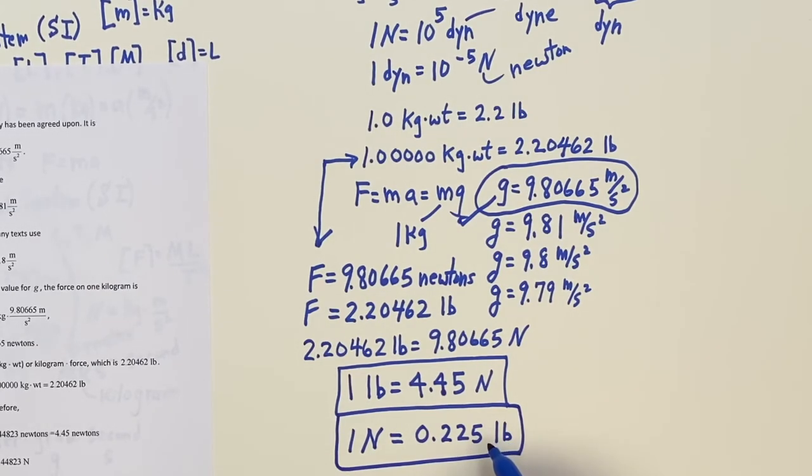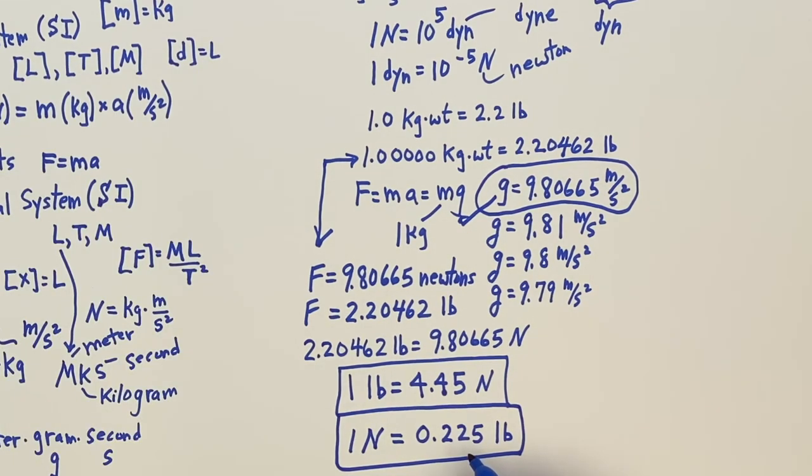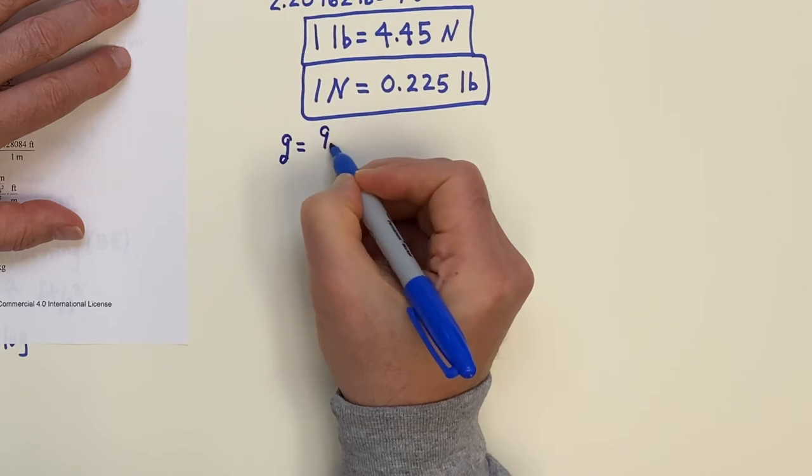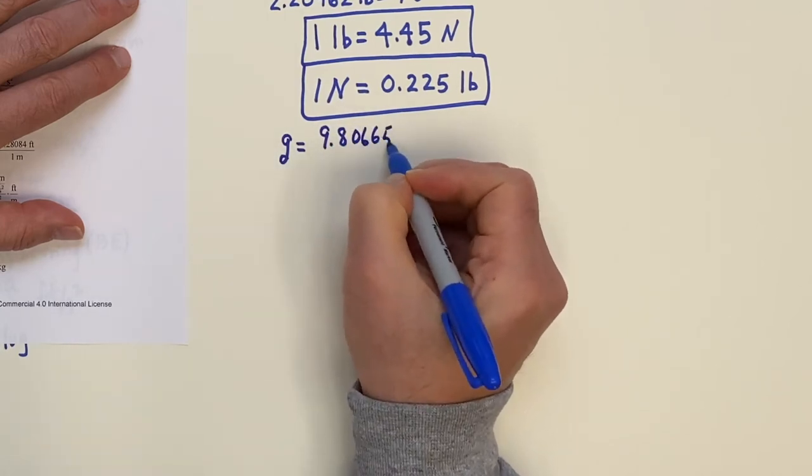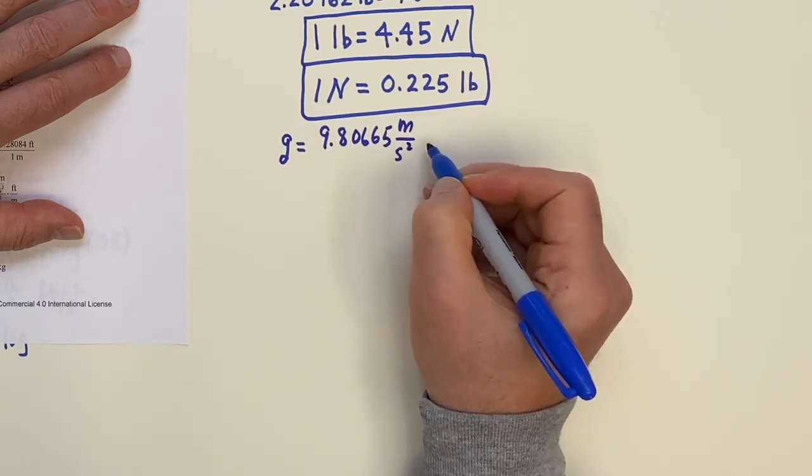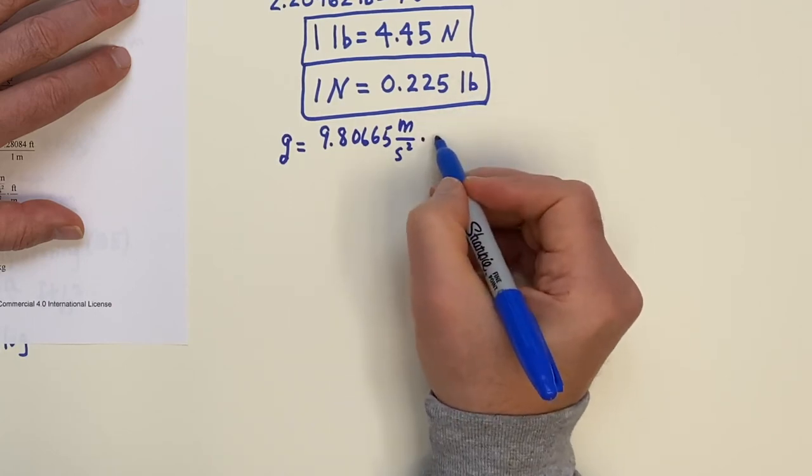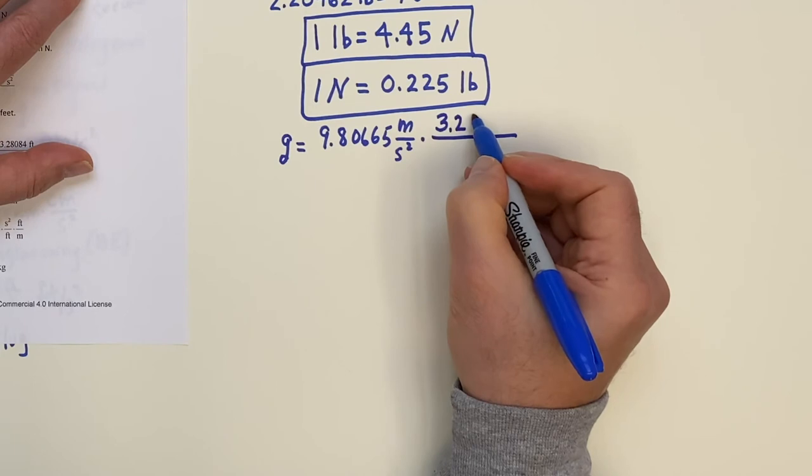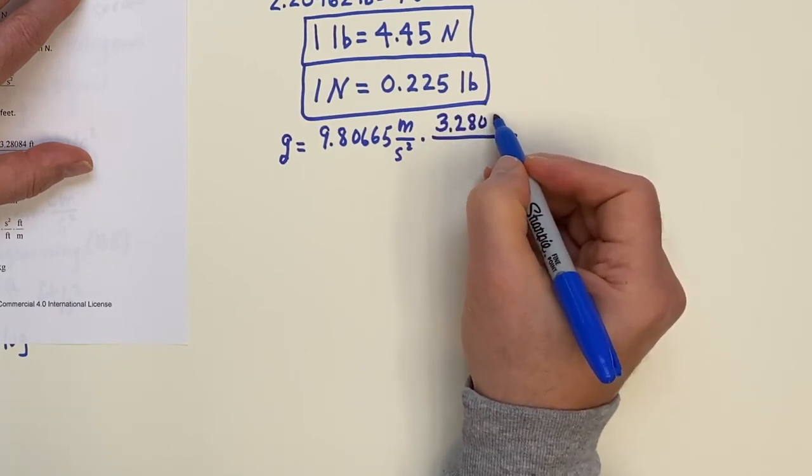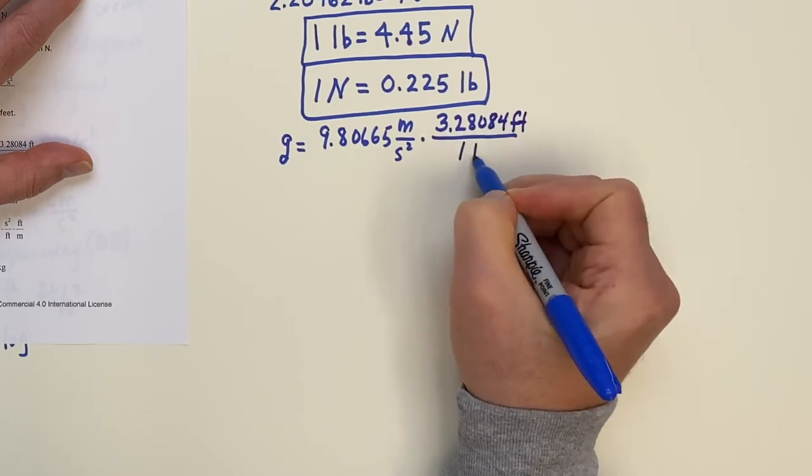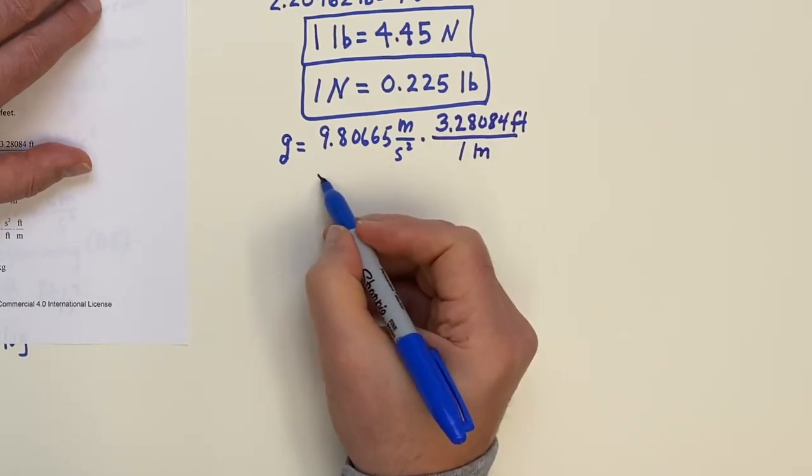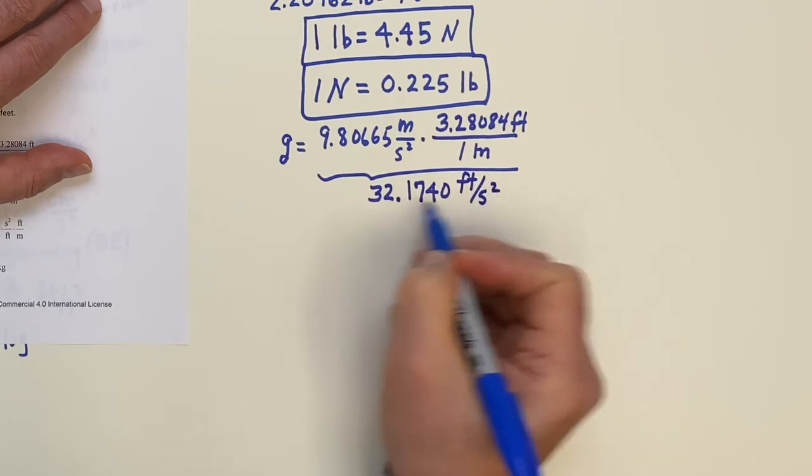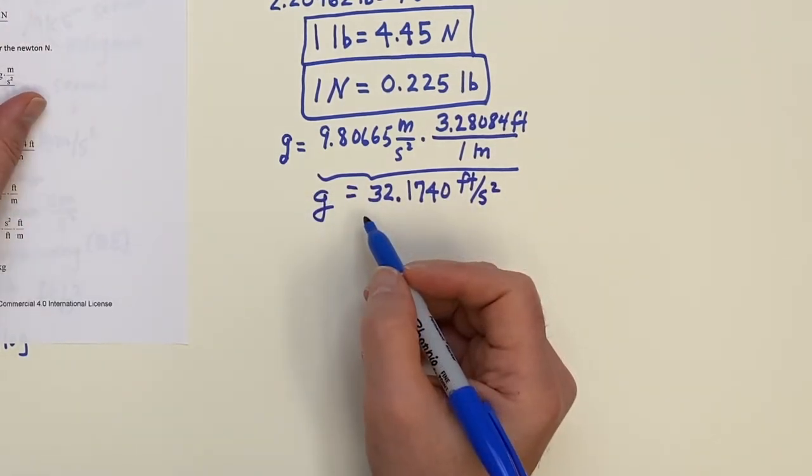And then if you were to divide both sides by 9.80665 to free up the Newton, you would get one Newton is equal to three significant figures 0.225 pounds. See that's almost 10. So you divide and you get 0.2. So there you go. That's the conversion. Well, one more to go and that's the slug. Let's get the slug in there. So for the slug, what we're going to need to do is find the accurate value for g in the British system.